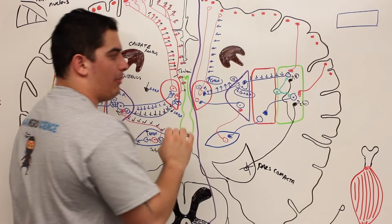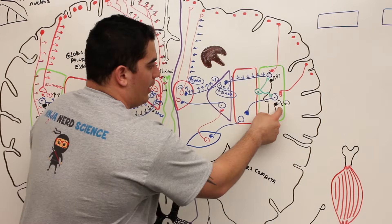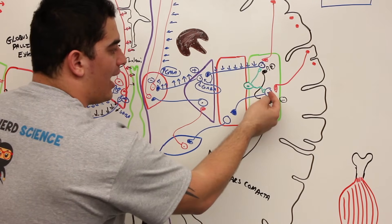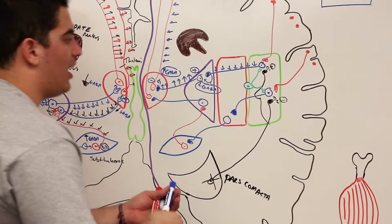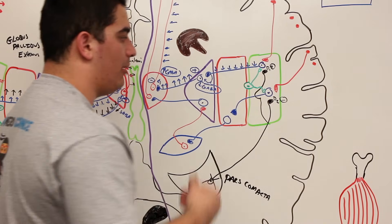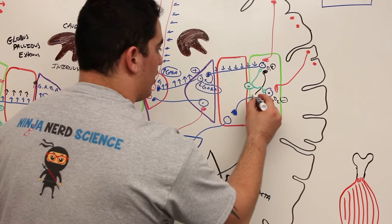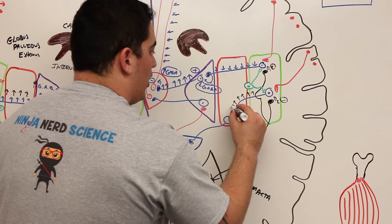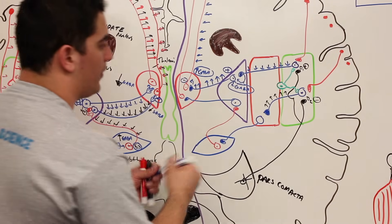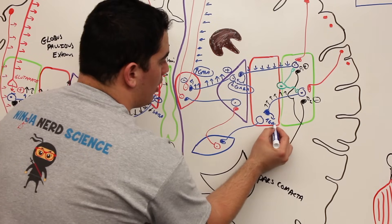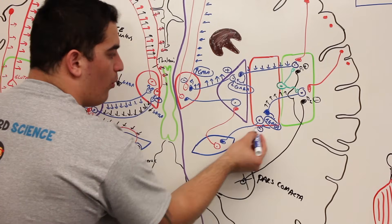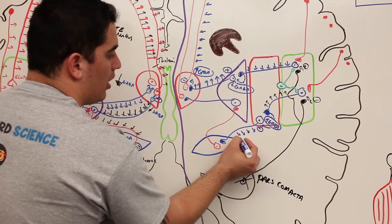Now let's see how this affects the indirect pathway. Normally dopamine inhibits the indirect pathway neuron, but with less dopamine being released there's less inhibitory input — releasing it from inhibition and stimulating it. So this neuron will have slightly increased action potentials, releasing more GABA, creating more inhibitory input on the next neuron, giving it less action potentials.